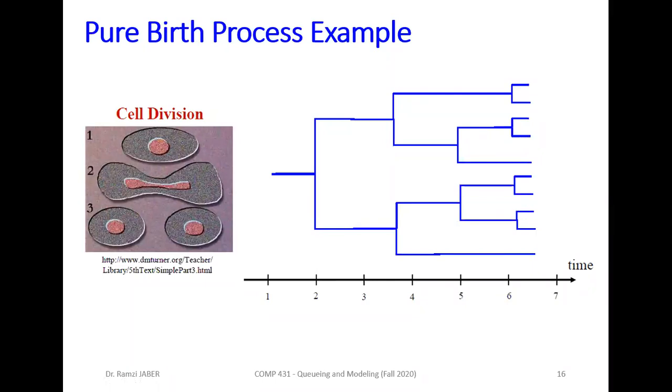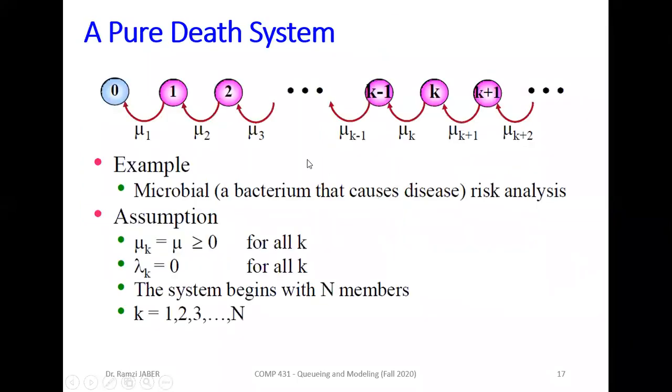Pure birth process example: cell division in biology. Every cell divided by two, every cell at time 1. At time 2 divided by two, at time 3 or 4 divided by 2^2, and so on to 2^n. This is called pure birth process example. That's why the birth process and death process are used in biology, because we have cells divided by two every time.